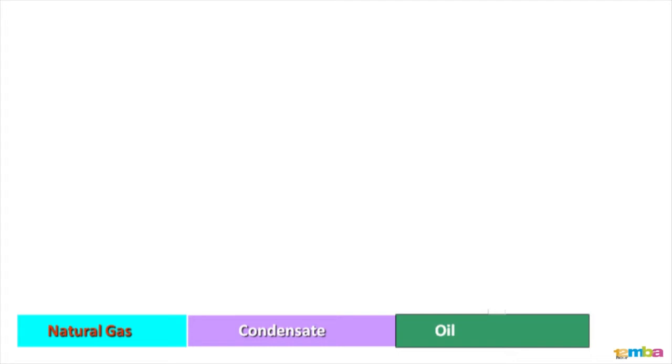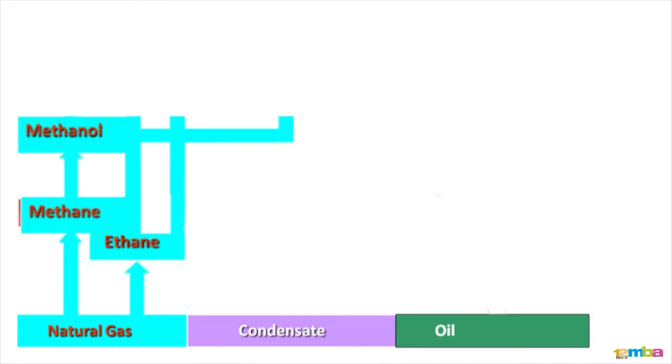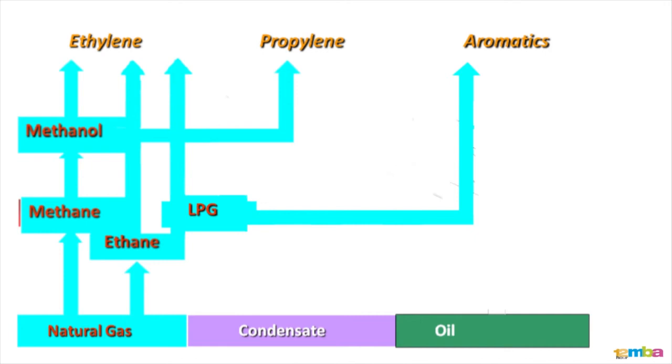All of these are sources of hydrocarbons for petrochemicals. Starting with the lightest one, natural gas would contain methane and ethane. Methane can get converted to methanol and finally to ethylene, the basic building block for polyethylene. And progressing along those lines, you will see methanol can also be used as a feedstock to making of polypropylene. Methane, ethane, along with LPG can also be used in the manufacture of aromatics.